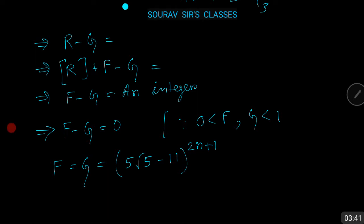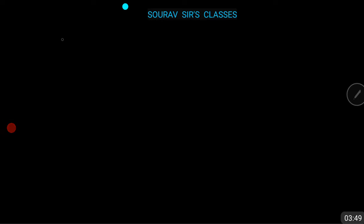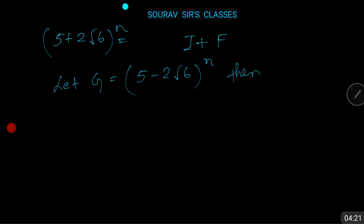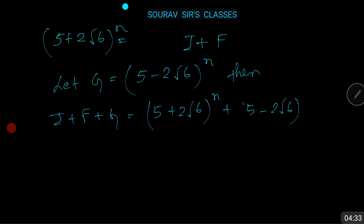Now consider the irrational number (5 + 2√6)^n. Let I and F denote its integral and fractional parts, so (5 + 2√6)^n = I + F. Let g = (5 - 2√6)^n. Then I + F + g equals (5 + 2√6)^n + (5 - 2√6)^n.